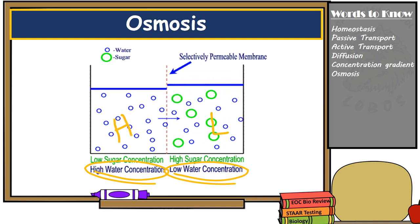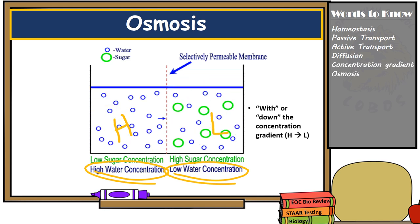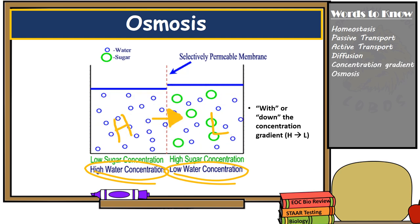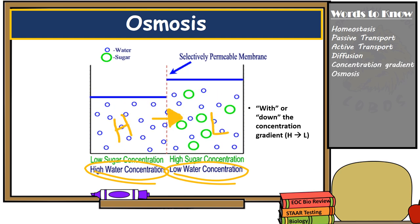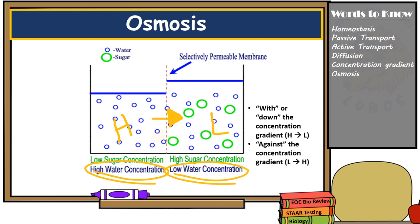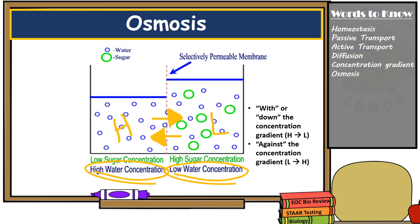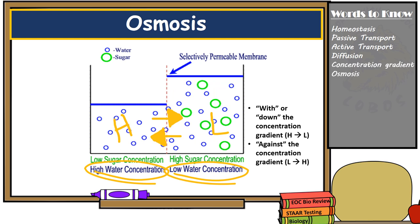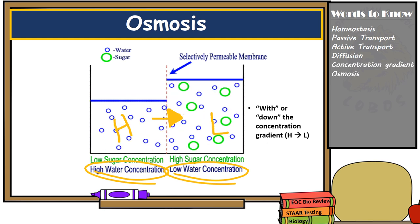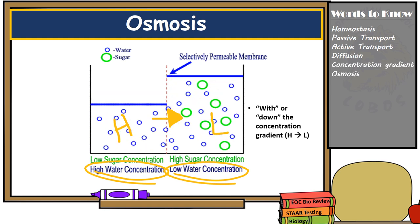Transport of molecules may be described as moving with or down the concentration gradient, meaning from high to low concentration, or moving against the concentration gradient, meaning from low to high concentration. Osmosis, for instance, is a passive transport of water molecules and it moves with the concentration gradient — from high to low concentration.